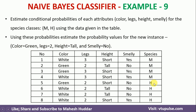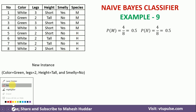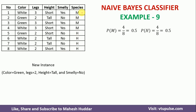To do this, the very first thing we need to do is calculate the prior probabilities of the target variable — that is, the probability of M and the probability of H. We have a total of 8 examples, with 4 of type M and 4 of type H. So the probability of M is 4/8 and the probability of H is 4/8, which equals 0.5 and 0.5.